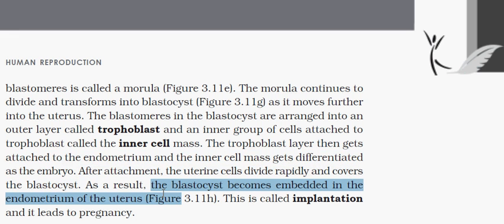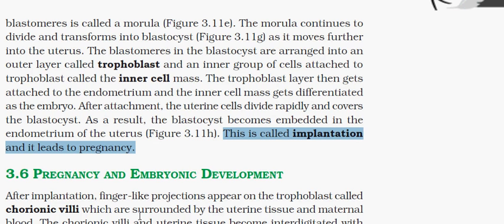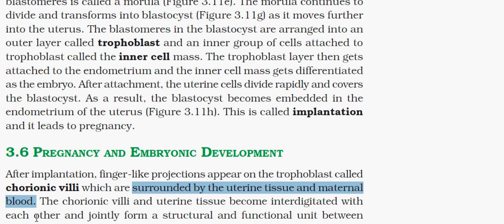After implantation, finger-like projections appear on the trophoblast called chorionic villi, surrounded by uterine tissue and maternal blood. These two structures become interjoined and form a structural and functional unit between the developing embryo and the maternal body.